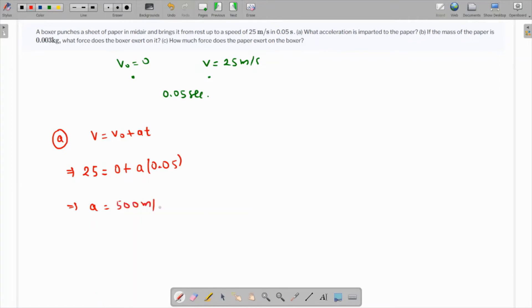Part B talks about the mass of the paper, 0.003, then what is the force which the boxer exerts on it? So again, a straightforward question because the force is mass times acceleration. Mass is 0.003, acceleration is 500, so that will come out as 1.5. So 1.5 Newtons is the force which is exerted by the boxer on the paper.